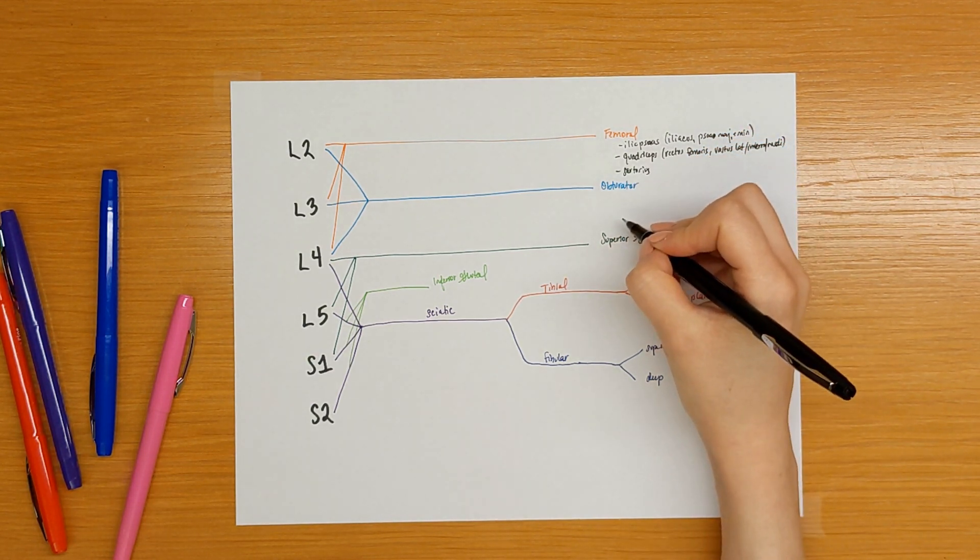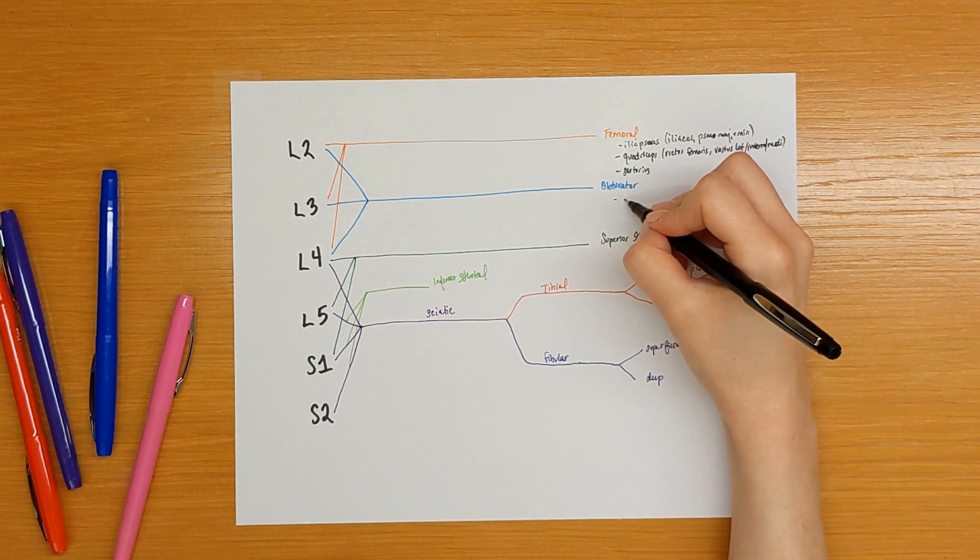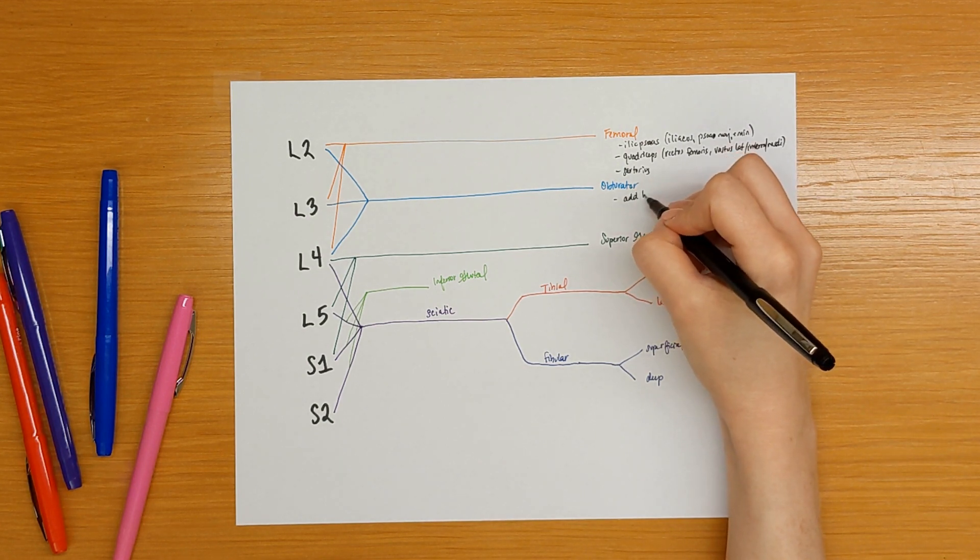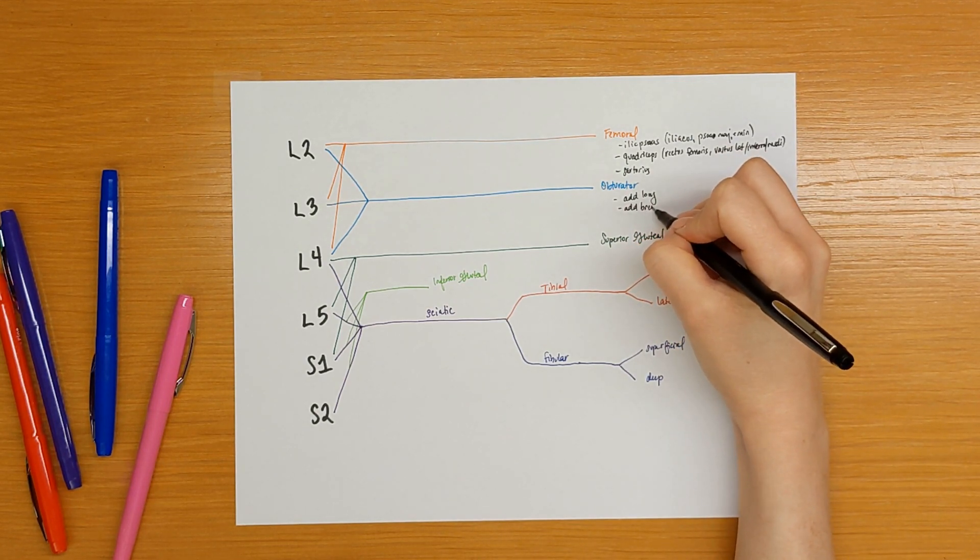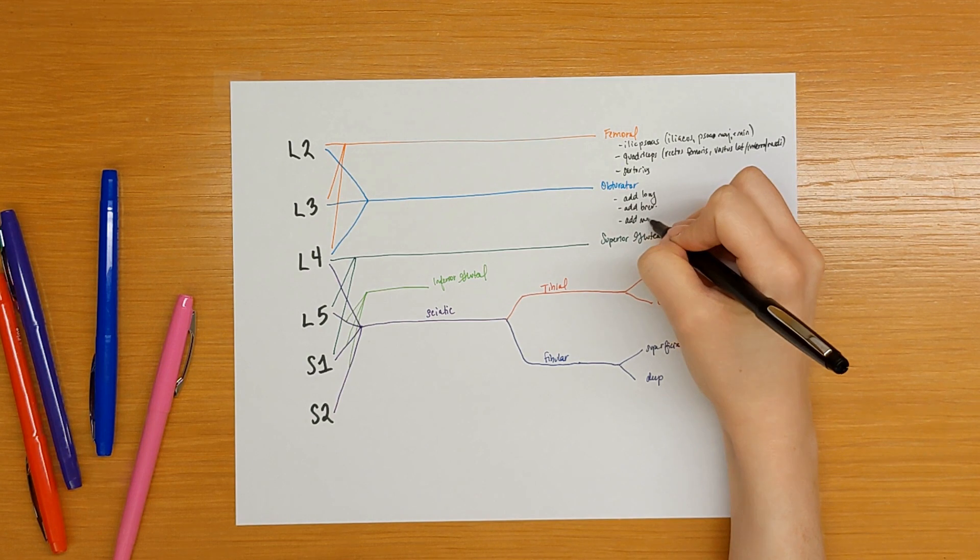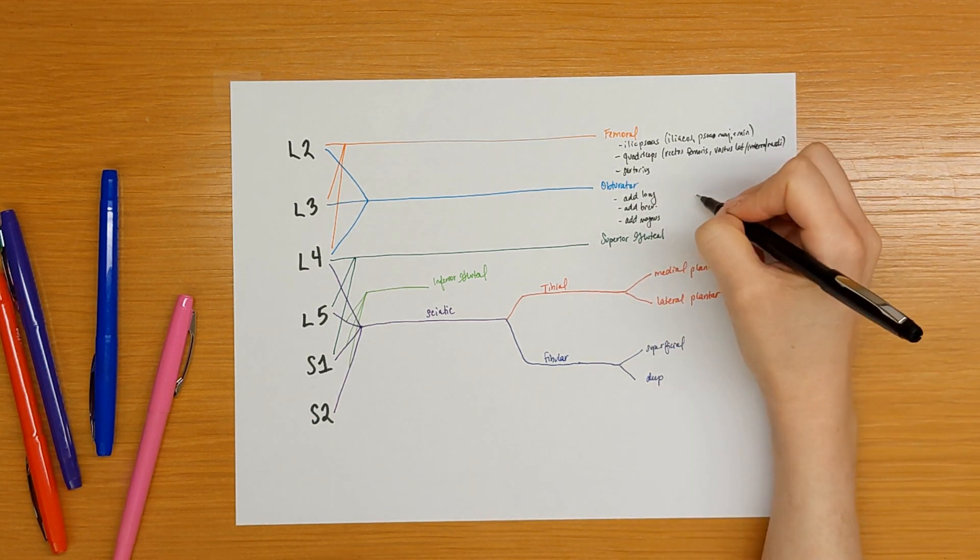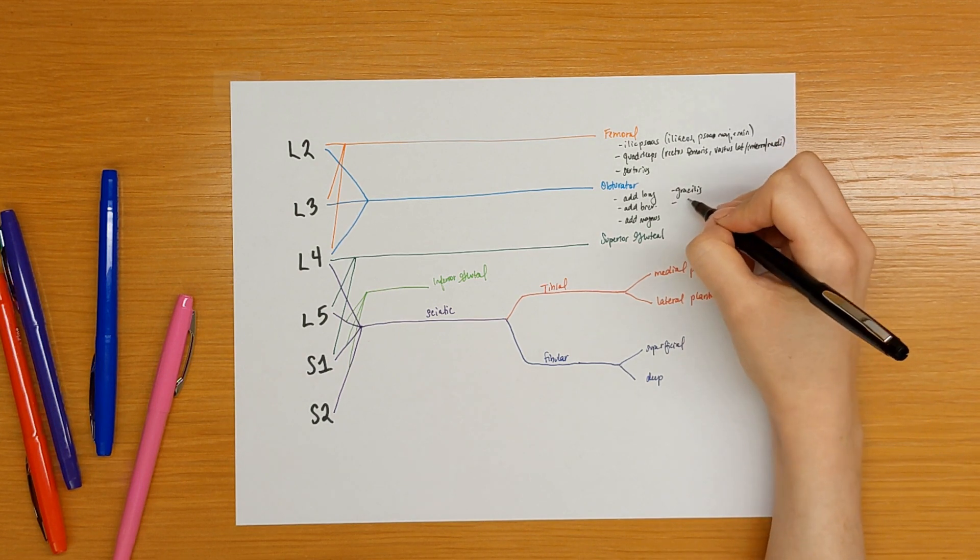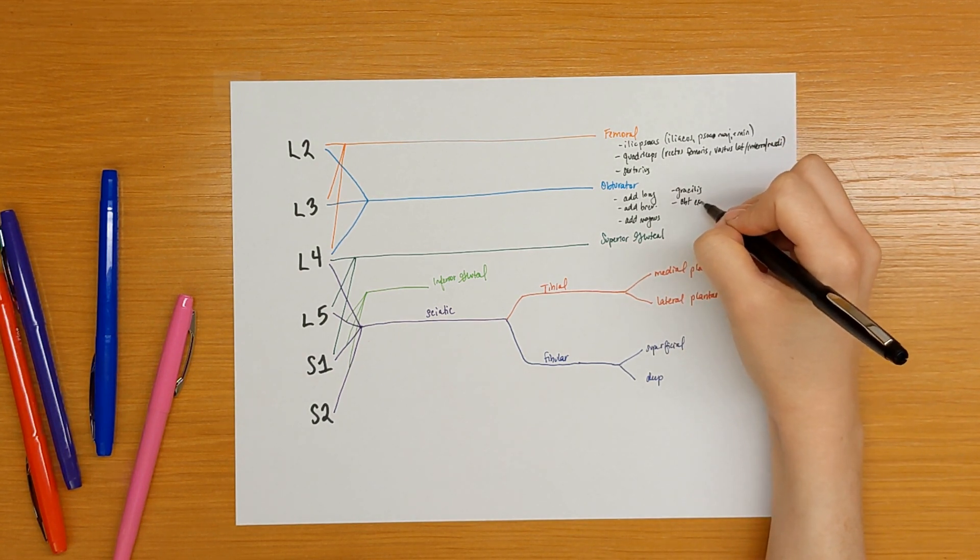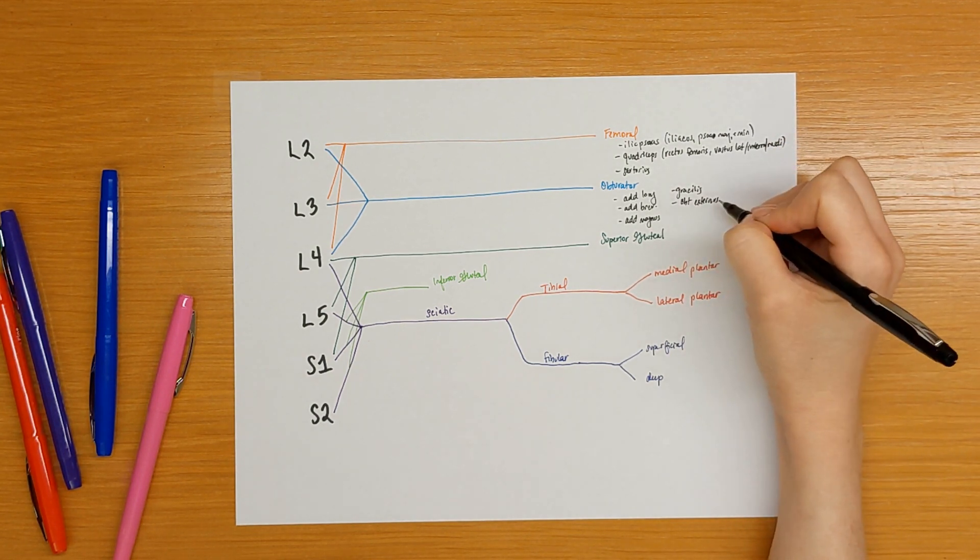The obturator nerve innervates the thigh adductors which is the adductor longus, adductor brevis, and the adductor magnus, as well as the gracilis, and the obturator externus muscles.